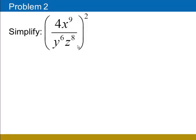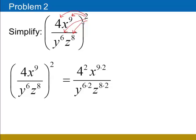In this problem we have a fraction raised to an exponent, and we're going to bring that exponent in to each of the four bases. In the case where we have an exponent, we'll multiply 2 by each of those exponents, but when we raise the number 4 to the power of 2, we'll have 4 squared. To simplify, we raise 4 to the second power and multiply all three exponent pairs. 4 squared is 16, and the exponents are x to the 18th in the numerator, y to the 12th, z to the 16th in the denominator.